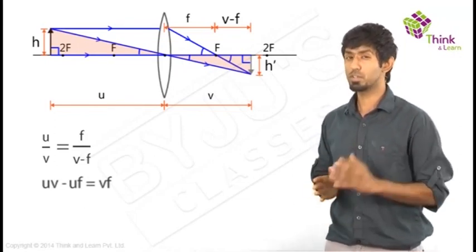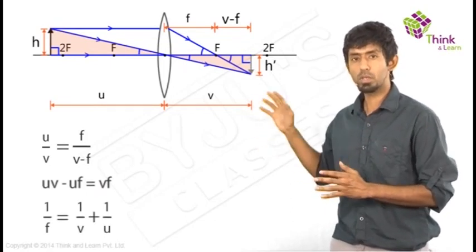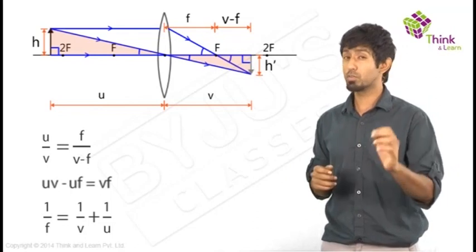That's right. It's an argument of beauty. So you get something, right? Something involving 1 by V, 1 by U, and 1 by F.